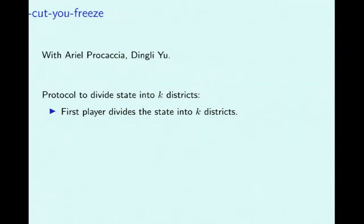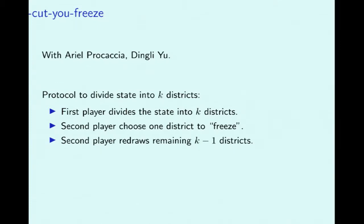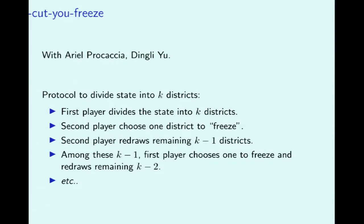Here's the protocol to divide a state into K districts. First, the first player divides the state into K districts, respecting any legal requirements. Then that districting is given to the other player, who freezes one of those districts — picks their favorite — and redraws the other K-1 however they want. The map goes back to the first player, who from those K-1 freezes one and redraws the remaining K-2. This continues, with two frozen districts — one from each player — until all districts are determined.